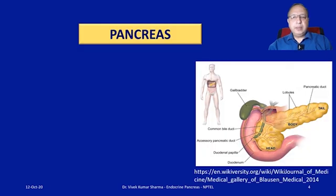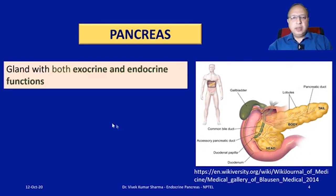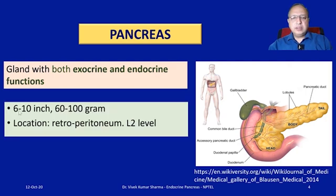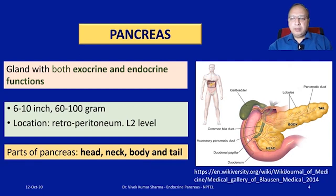Coming to the introduction to pancreas — the pancreas is a gland with both exocrine and endocrine functions. It is roughly 6 to 10 inches and 60 to 100 grams, and it is located retroperitoneally at the level of L2. The parts of pancreas include the head, neck, body, and tail.